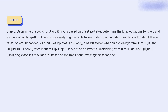Step 5: Determine the logic for S and R inputs based on the state table. Analyze the table to determine under what conditions each flip-flop should be set, reset, or left unchanged. For the S input of flip-flop 1, it needs to be 1 when transitioning from 00 to 11 (i.e., input=1 and current state Q0=0). For the R input of flip-flop 1, it needs to be 1 when transitioning from 11 to 00 (i.e., input=1 and current state Q0=11). Similar logic applies to S and R of flip-flop 0 based on the transitions involving the second bit.